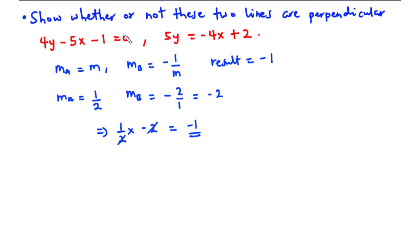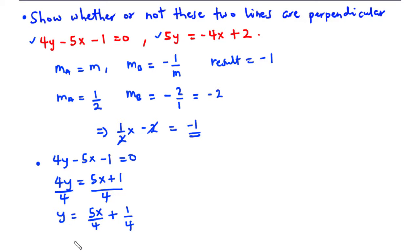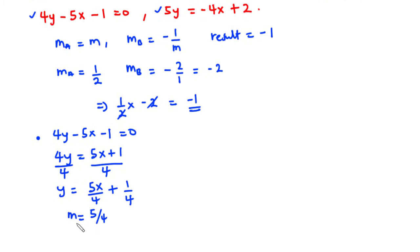Now we have a question: show whether or not these two lines are perpendicular. We will represent both equations in slope-intercept form, then multiply the gradients to see if the result is negative 1. For the first equation, 4y minus 5x minus 1 equals 0, we transpose to get 4y equals 5x plus 1, then divide through by 4: y equals 5x over 4 plus 1 over 4. So the gradient of line A is 5 over 4.